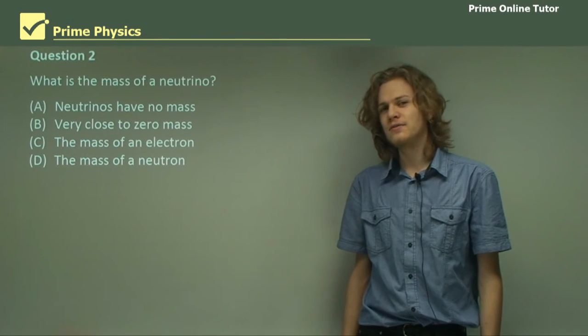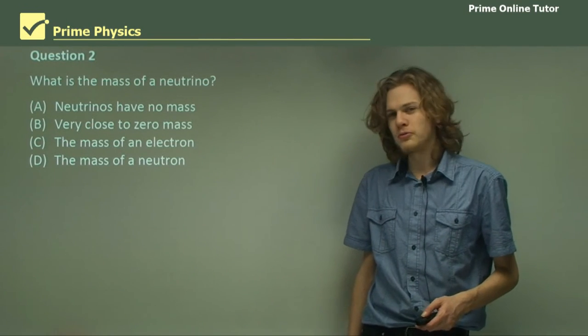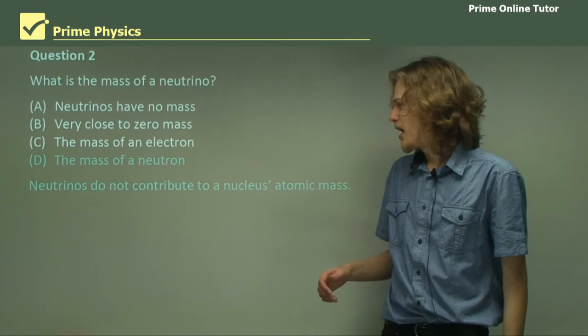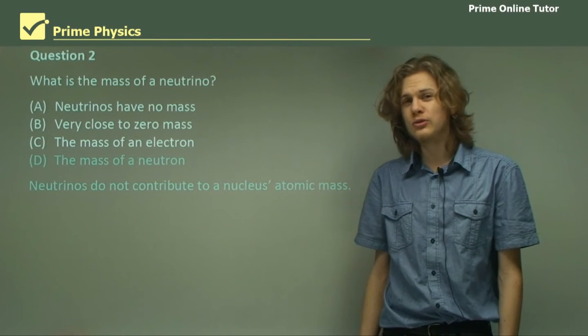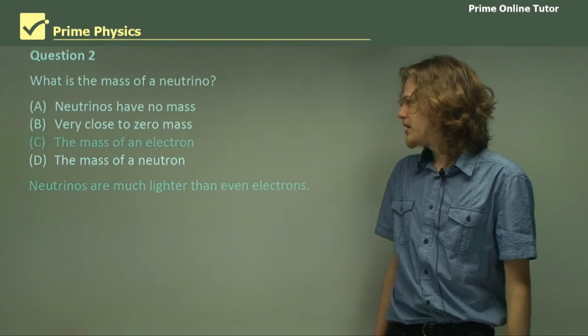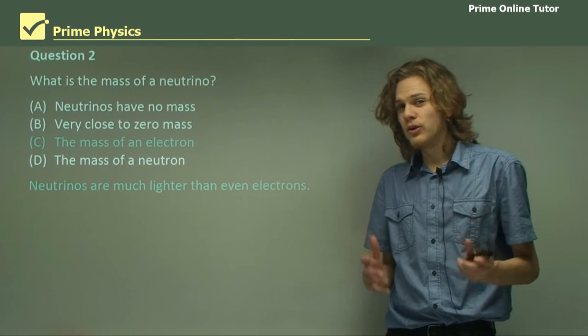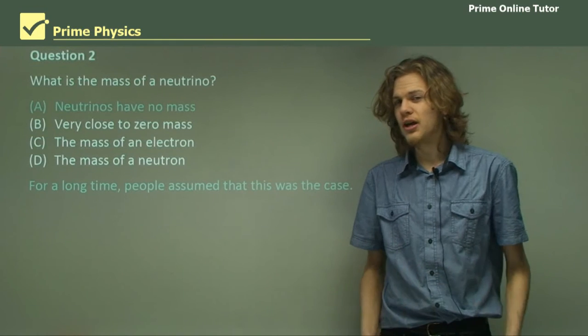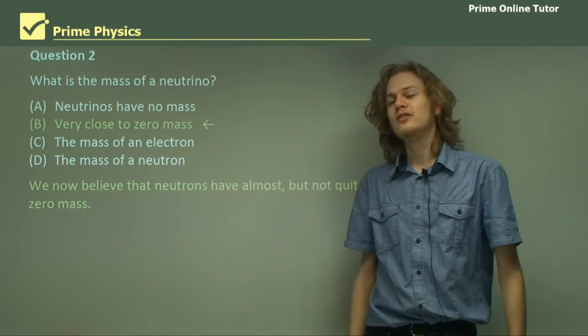Question two: what is the mass of a neutrino? Once again, this was in a fair bit of debate until recently. The mass of a neutron? A neutron is an uncharged particle and a nucleon, so it contributes to the atomic mass of an atom. Neutrinos do not contribute to the atomic mass. They are way too tiny, thousands of times lighter than even an electron. The working answer until recently was that neutrinos had no mass. But recent observations have indicated that they do in fact have mass, just a very small amount. So B is the correct answer.